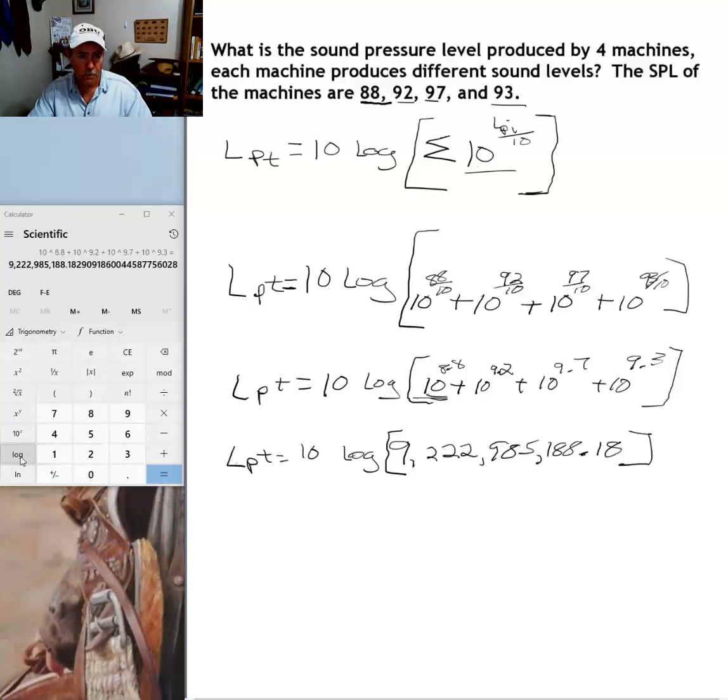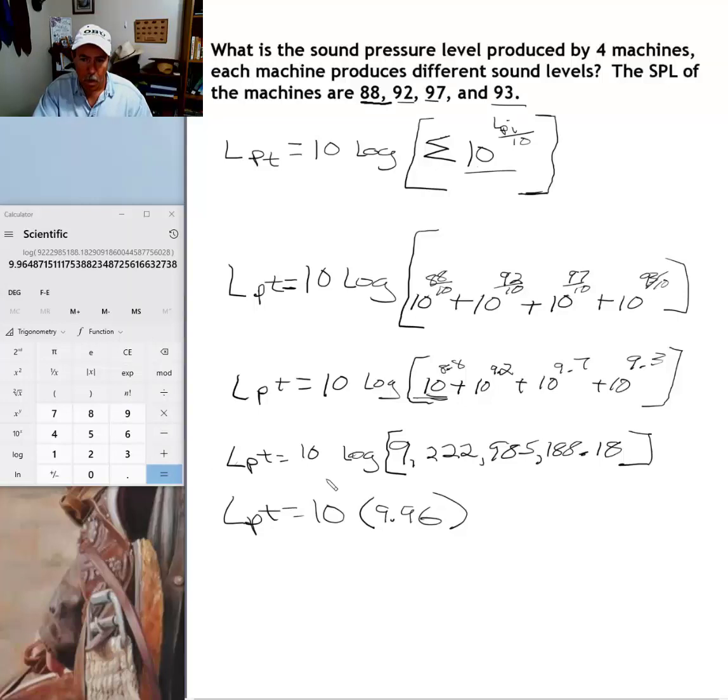But I'm going to go ahead and take the logarithm of this number by pushing the logarithm key. And voila, there we go. We have the logarithm of nine billion and some change. Good and bring this on down is ten times nine point nine six. The logarithm of this number is nine point nine six.